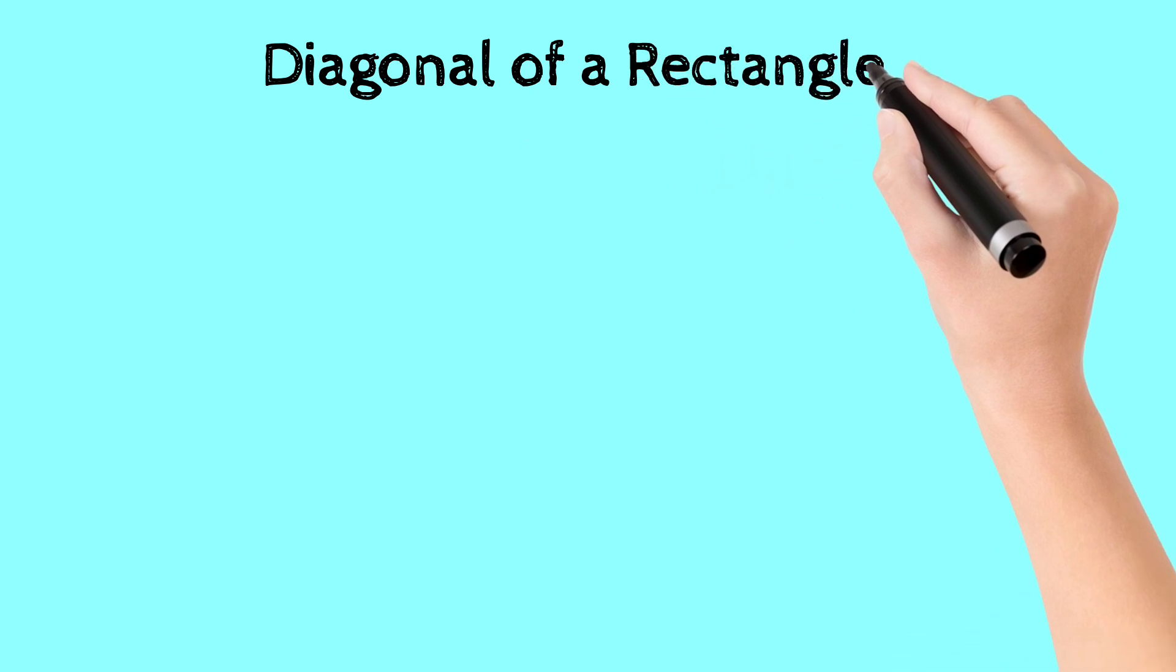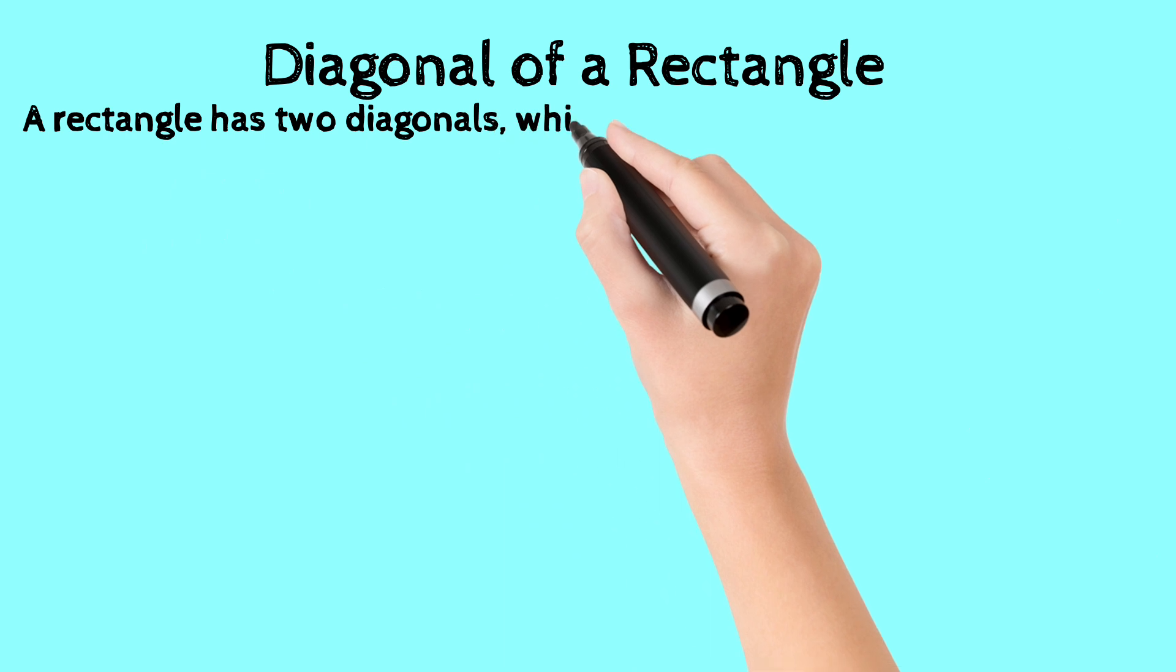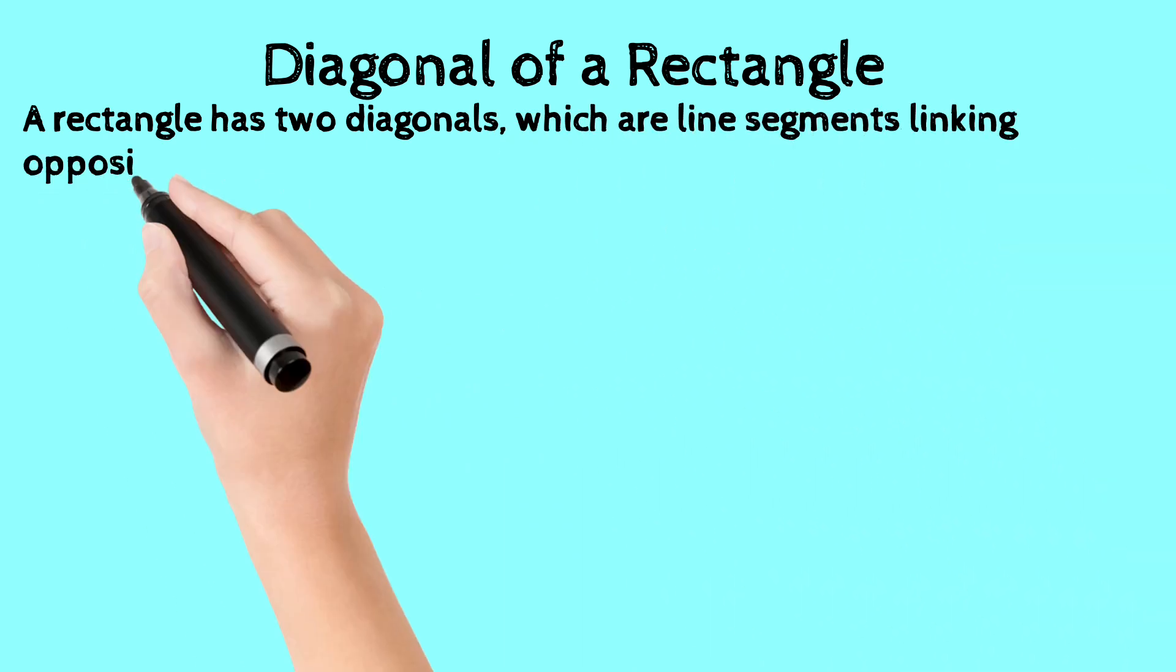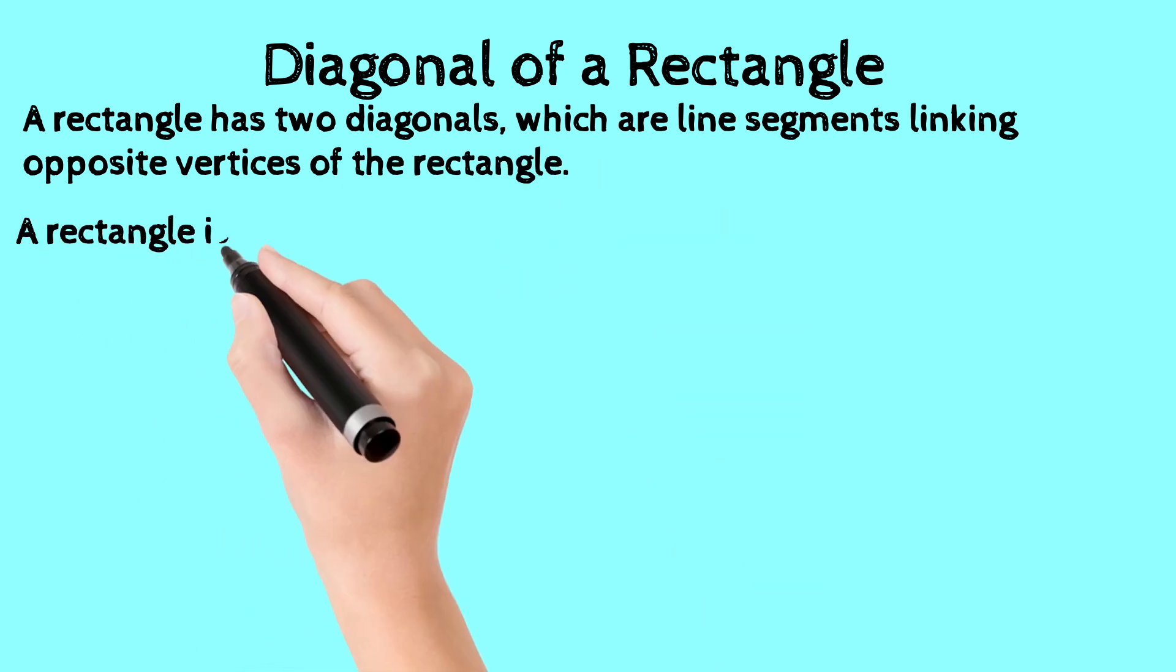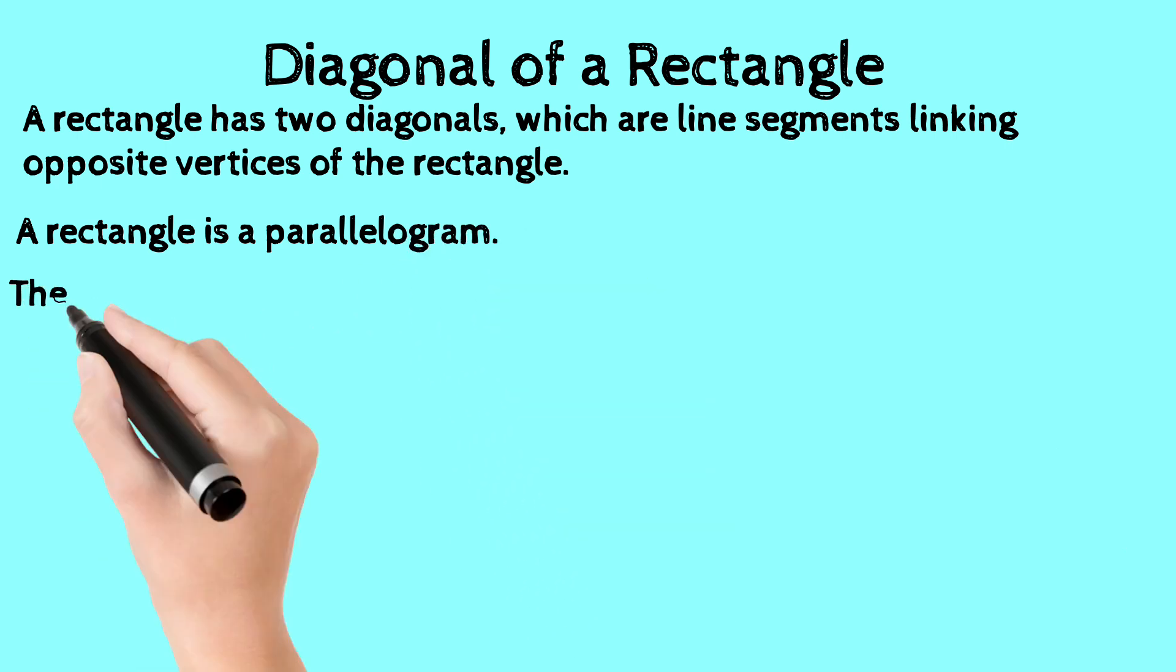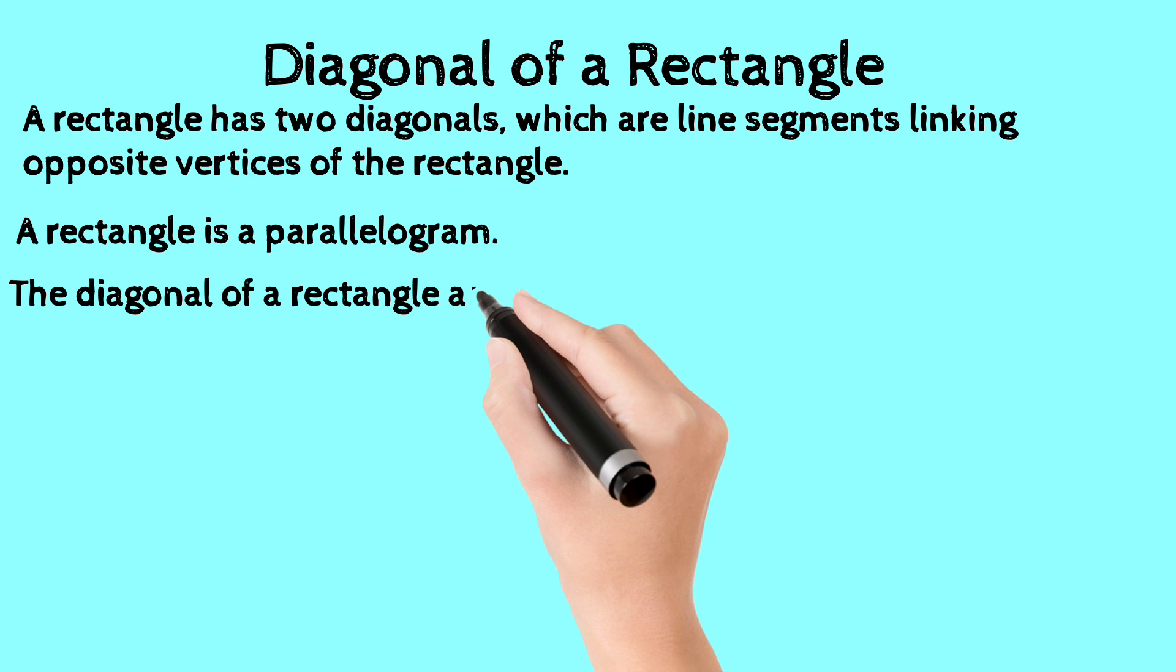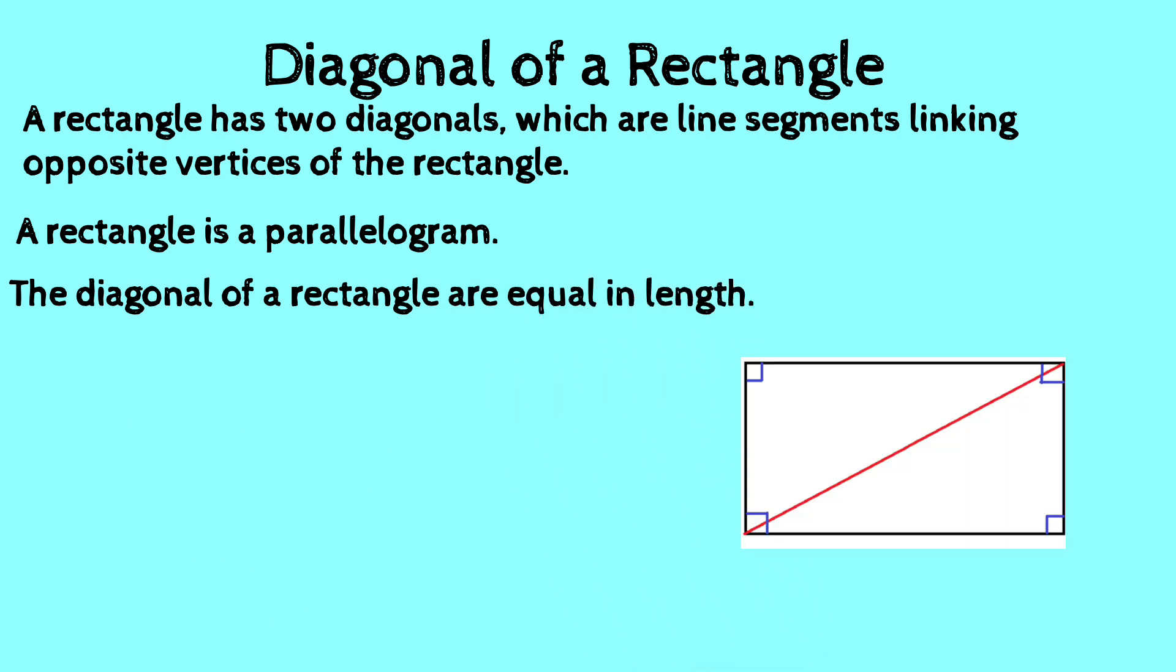Now let's see what diagonals are. A rectangle has two diagonals, which are line segments linking opposite vertices of the rectangle. A rectangle is a parallelogram, and the diagonals of a rectangle are equal in length.